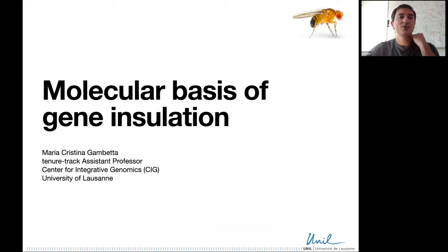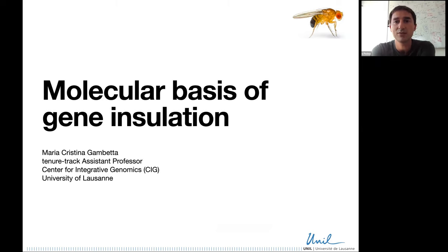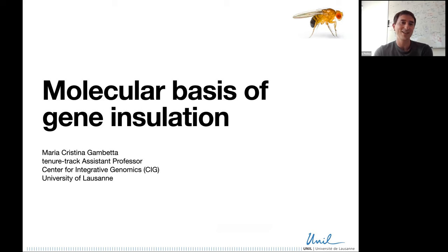It's my great pleasure to introduce Professor Gambetta, who studied biology at the University of Geneva and followed it up with a joint PhD between the EMBL in Heidelberg and the University of Geneva. After graduation, she moved to the lab of George Muller to study the molecular mechanics of polycomb regulation. She then briefly came back to EMBL for a postdoc where she started studying the role of chromatin architecture and insulator proteins in gene expression regulation.